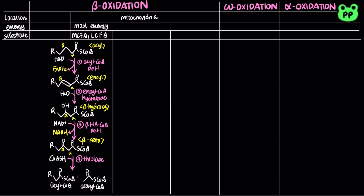In mitochondria, acetyl-CoA can then enter the citric acid cycle to be degraded to carbon dioxide. This process is known as beta-oxidation because the beta-carbon is oxidized to generate energy. Besides mitochondria, peroxisomes can also carry out beta-oxidation, which involves the same four repeating steps as mitochondrial beta-oxidation, but doesn't really contribute to energy production.